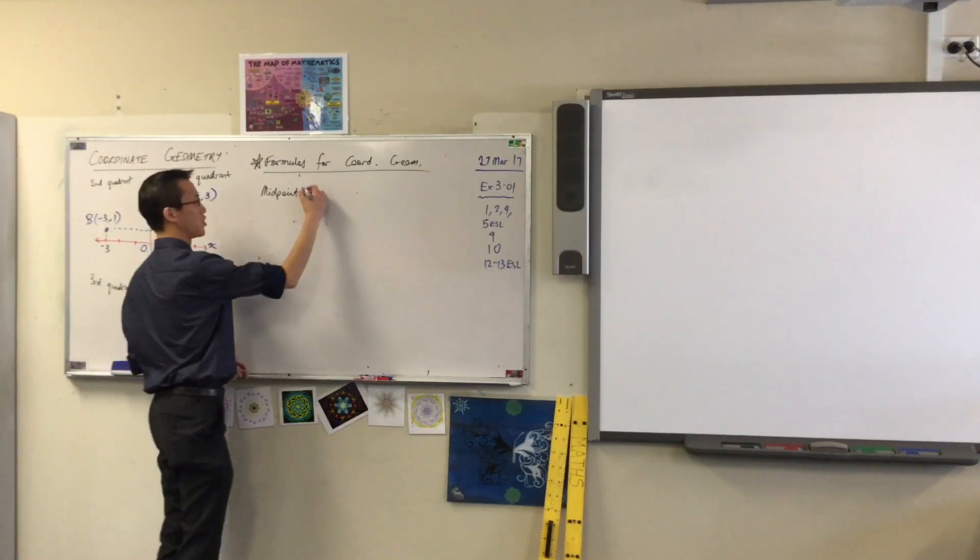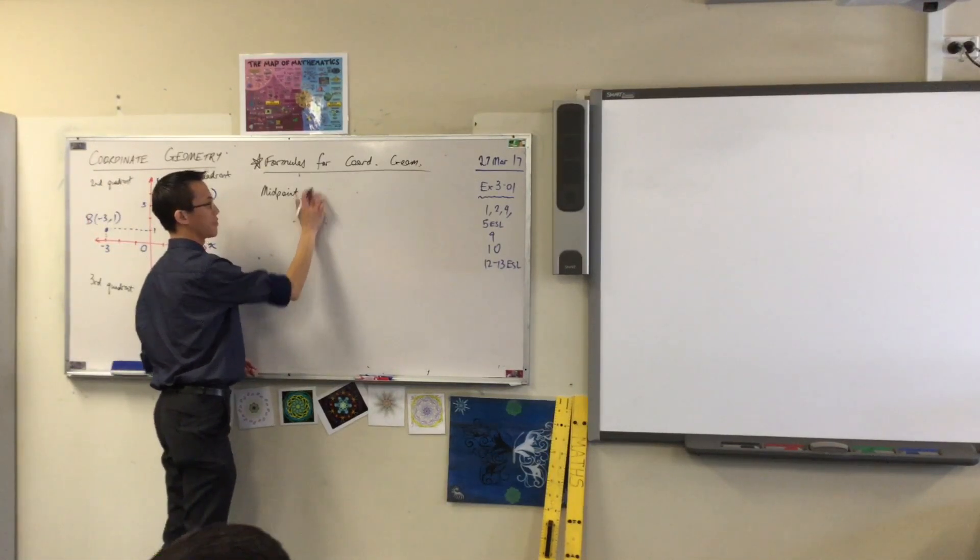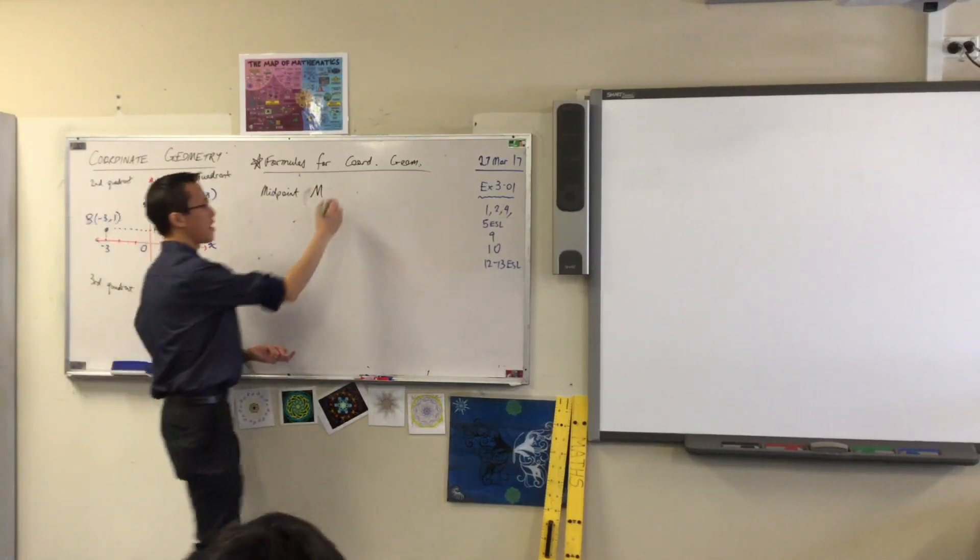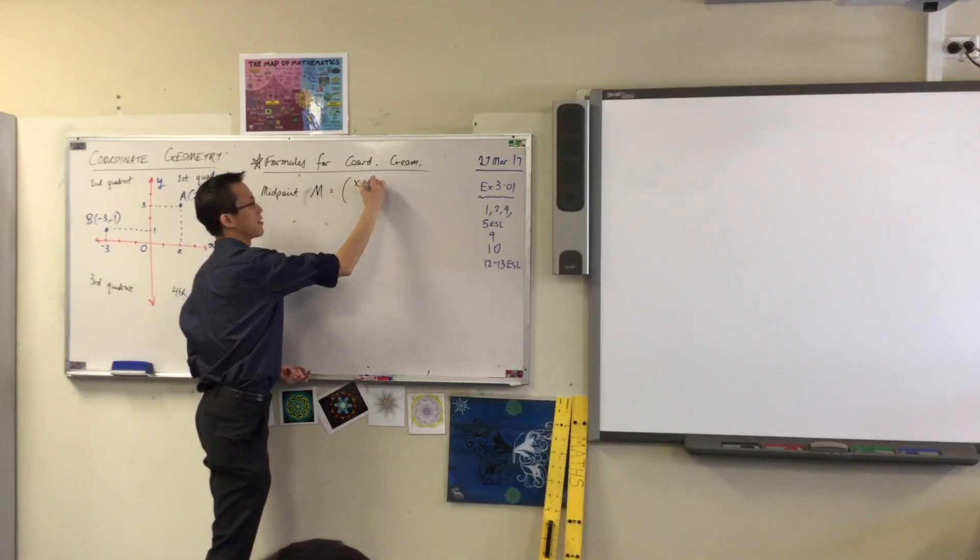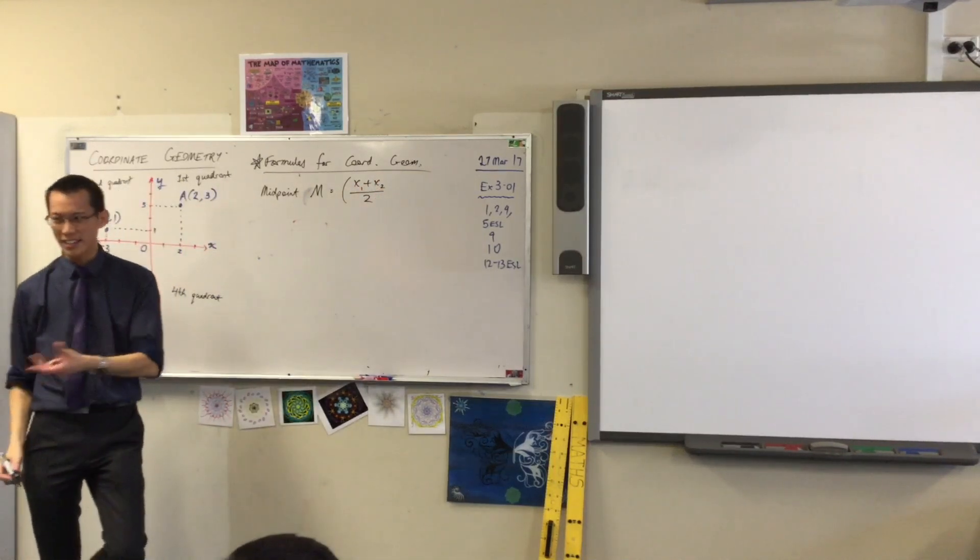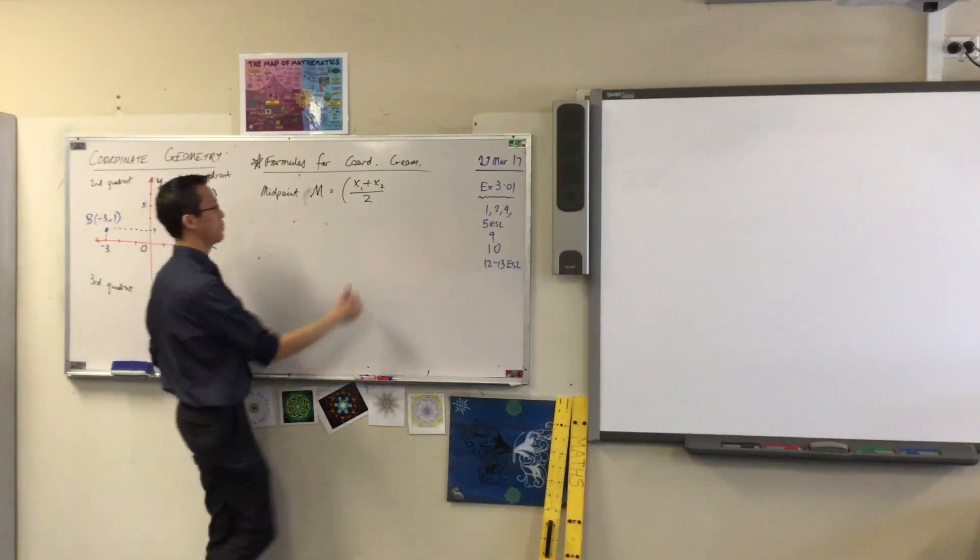So the midpoint, which is usually indicated with a capital M, like that, is a formula which looks like this. Yeah, little m is gradient, big M, capital M, is midpoint.